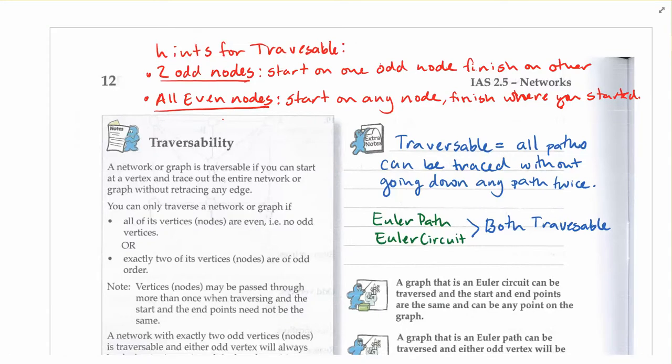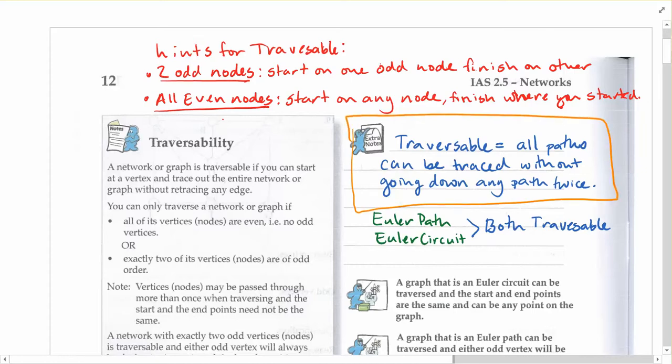We're going to be looking at what we call traversability. Traversability is basically a network where you can go along every single path and not repeat any of the paths more than once. Kind of like not retracing your steps. You can go along every single edge and cover every single edge in the network without repeating a single edge the whole way through.